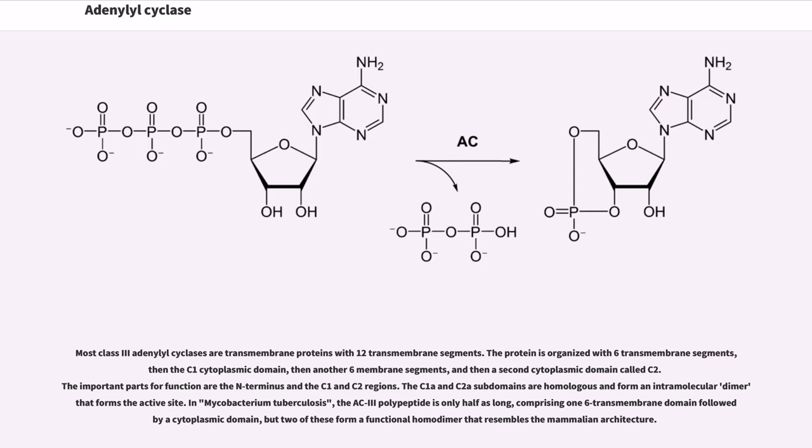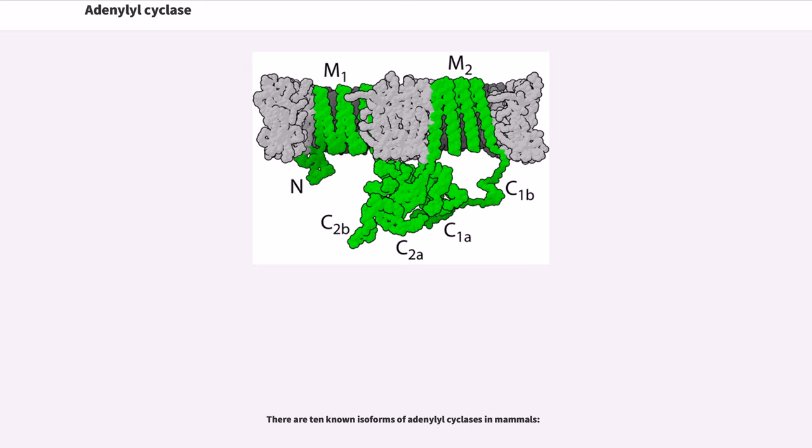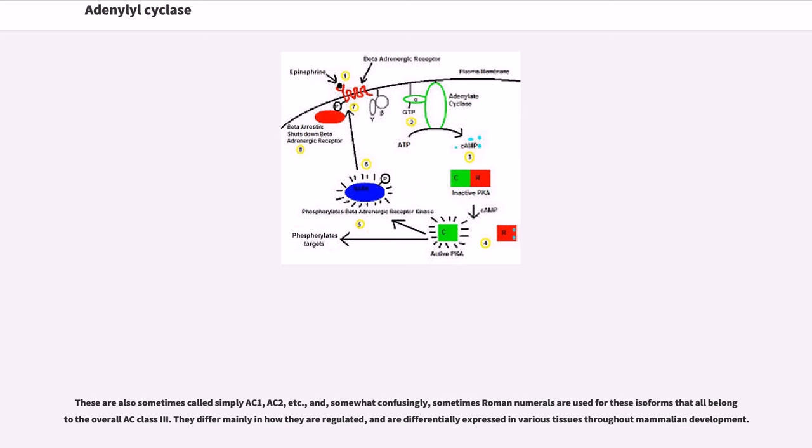Two of these form a functional homodimer that resembles the mammalian architecture. There are 10 known isoforms of adenylyl cyclases in mammals. These are also sometimes called simply AC1, AC2, etc., and, somewhat confusingly, sometimes Roman numerals are used for these isoforms that all belong to the overall AC class 3. They differ mainly in how they are regulated and are differentially expressed in various tissues throughout mammalian development.